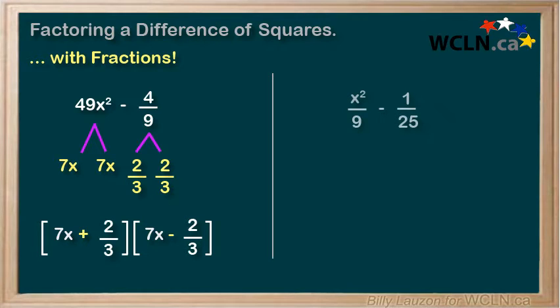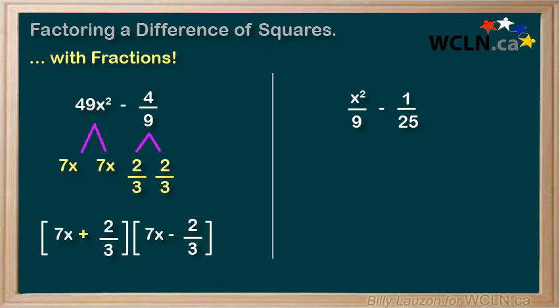In this next example, both terms are fractions. It might look a little funny having the x squared over 9 — that's sometimes written as 1 over 9 times x squared. Well, either way, it's a difference of squares. So x squared over 9 is x over 3 times x over 3, so we can put that below.